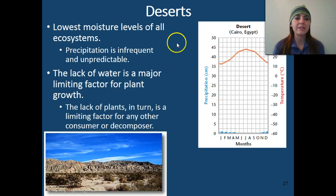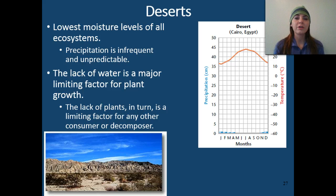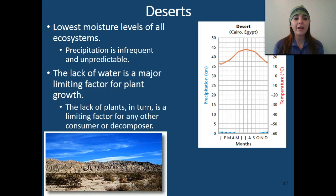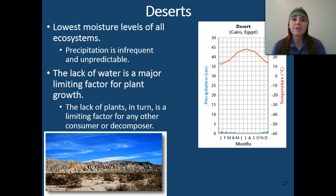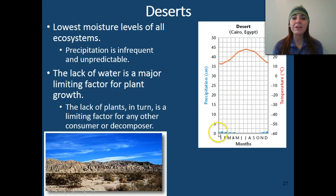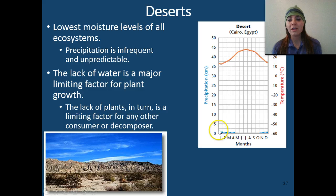Deserts have the lowest moisture levels of all biomes or ecosystems. Precipitation is very infrequent and also very unpredictable. The lack of water in this biome is a huge limiting factor for plant growth, and if there's not a lot of plants, we can't really support a lot of other life forms such as animals and decomposers. Looking at this climatograph, you can see the very low amounts of precipitation — January and December look like they have the most, but we're not even getting maybe one centimeter.